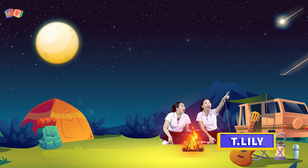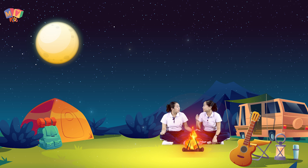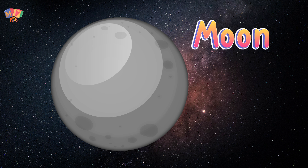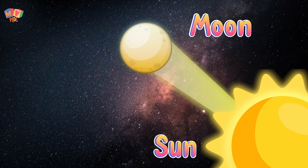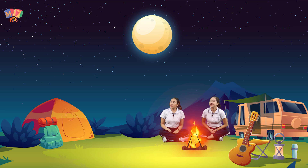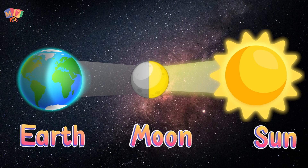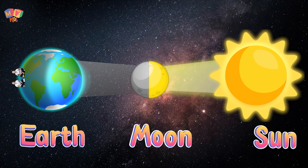Look, it's a shooting star! Look at the moon, it's so beautiful. Do you know that the moonlight we see is actually the sun's light? The moon does not have its own light. When you see the moon shining bright in the sky, that's when the side facing the earth gets the sunlight. When the moon is between the earth and the sun, we cannot see the moon in the night sky, as the side facing the earth does not get the sunlight.